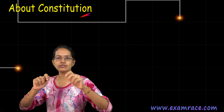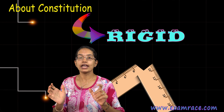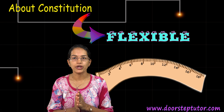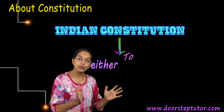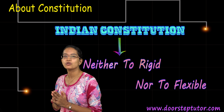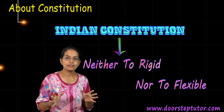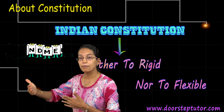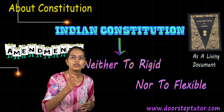What happens if you have something which is too rigid? If you try to bend it, it will break. And if something is too flexible, there won't be enough security. Same goes with the constitution — it should be neither too rigid nor too flexible. The Indian constitution is neither too rigid nor too flexible, which gives scope to bring in changes and amendments. Therefore, we say the Indian constitution is a living document. Every time there is a need to change existing norms or rules, you bring in an amendment.